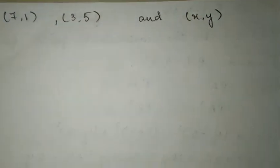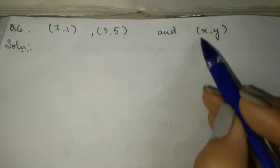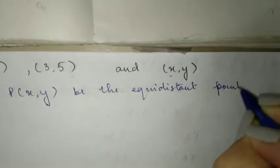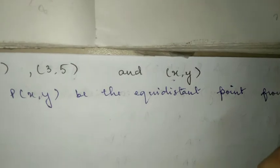Now in the next question, we will write down what's been given to us. Let P(x, y) be the equidistant point from A which is (7,1) and B which is (3,5).